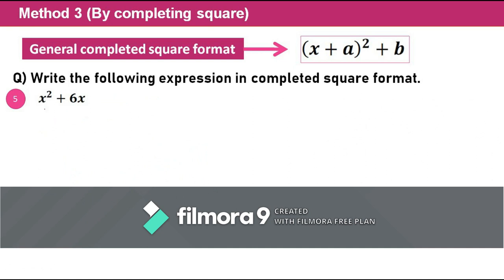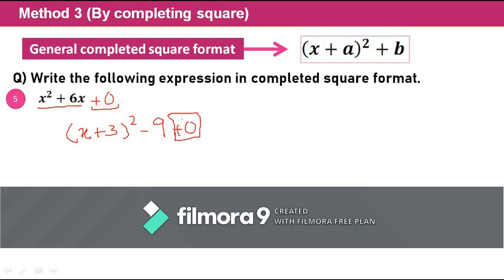Sometimes we have a quadratic equation with no constant term. We can imagine there's a +0 here, but it has no worth — it's just for ease. I go with the same procedure: put the bracket first with the square, then the variable, then plus. The value of a = 6/2 = 3. Subtract the square of 3, which is 9, and plus 0 has no worth. Answer: (x + 3)² − 9.